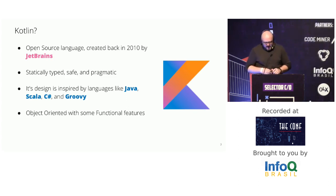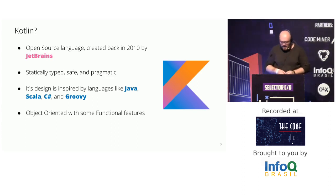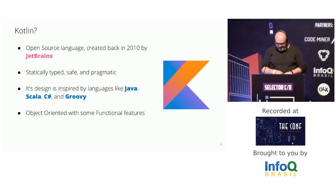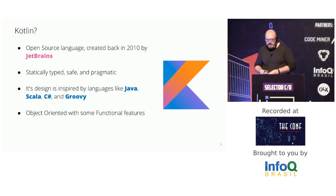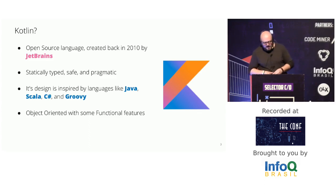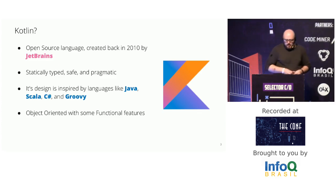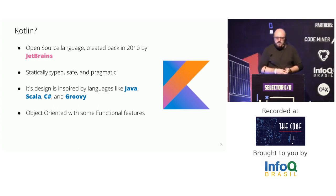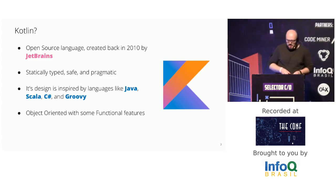Kotlin is an open-source programming language created by JetBrains back in 2010, with the primary goal of helping on development of its IDEs. JetBrains is a company that develops IntelliJ — the base of Android Studio — and other IDEs for languages like Ruby, Python, C++, and others. The first stable release of Kotlin was in 2016.